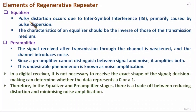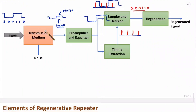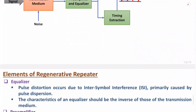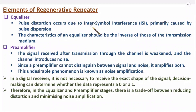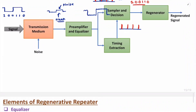Now let me explain each element one by one. First is the equalizer. The primary goal of the equalizer is to reshape the received signal. After the transmission medium, there are two issues: attenuation and noise getting added. Due to noise there will be shape distortion with the signal, and that shape distortion can be eliminated by the equalizer. There will be pulse distortion that may lead to inter-symbol interference, primarily caused by pulse dispersion. The characteristic of the equalizer should be the inverse of the transmission medium, because it is due to the transmission medium that noise gets added with the signal.